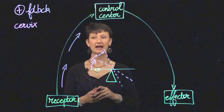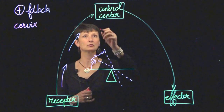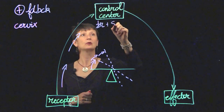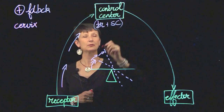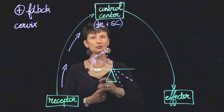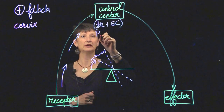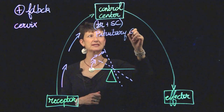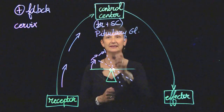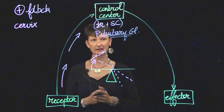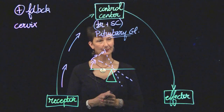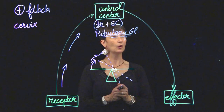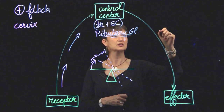And that information now makes it to the control center. Remember, the control center includes usually the brain and the spinal cord. But in this case — and I'm putting this in parentheses — our control center is going to be a major gland, which we call the pituitary gland. So it's not always the central nervous system that functions as a control center; in this case, it's going to be a gland. And what's going to happen is that this gland is going to respond by releasing a hormone called oxytocin.